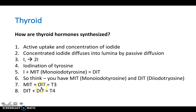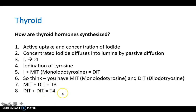If you add a MIT and a DIT together, you get T3 — three iodine molecules per tyrosine. If you add a DIT and a DIT together, you get T4 — four iodine molecules. This explains why the thyroid releases a lot more T4, but the body wants T3. So T4 needs to undergo a deiodinization reaction in order to remove an iodine from T4 to form T3.